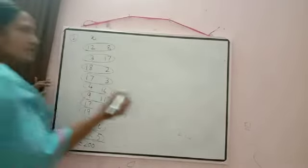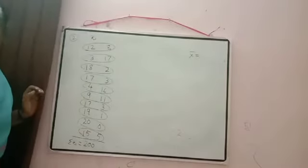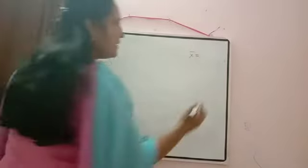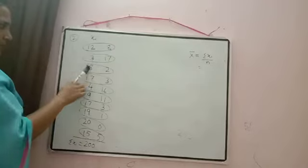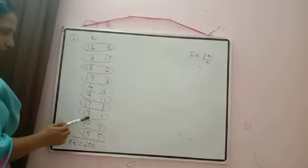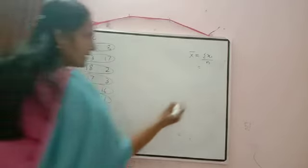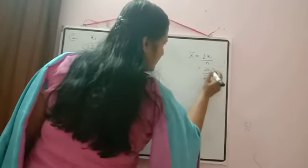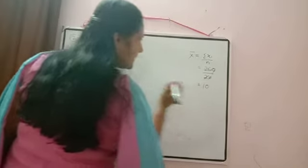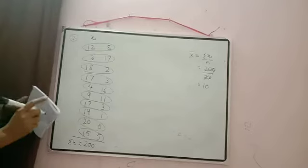Now calculate the mean. x̄ = Σxᵢ / N. Counting the observations: there are 20 observations. So x̄ = 200 / 20 = 10. Mean is equal to 10.